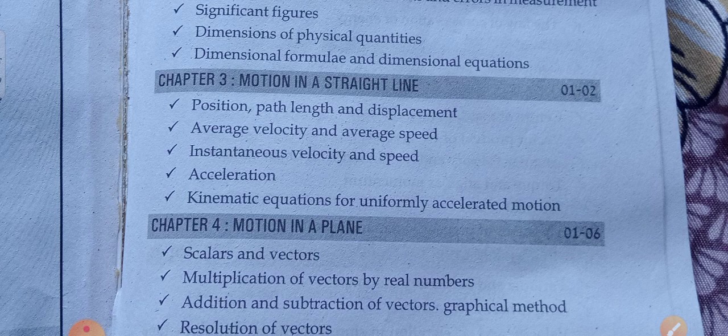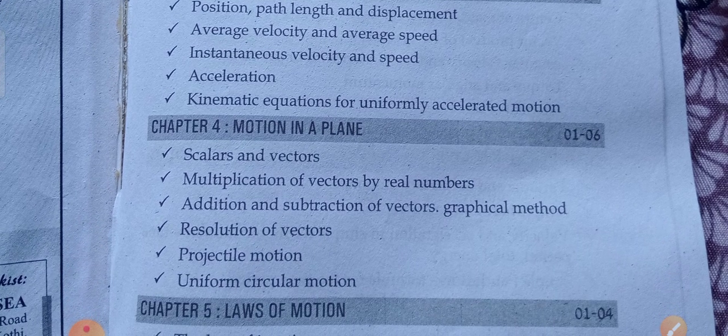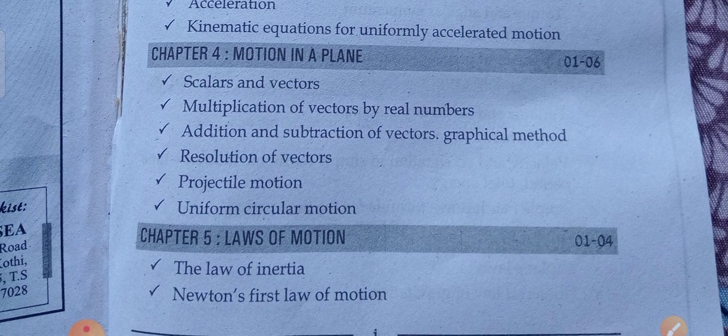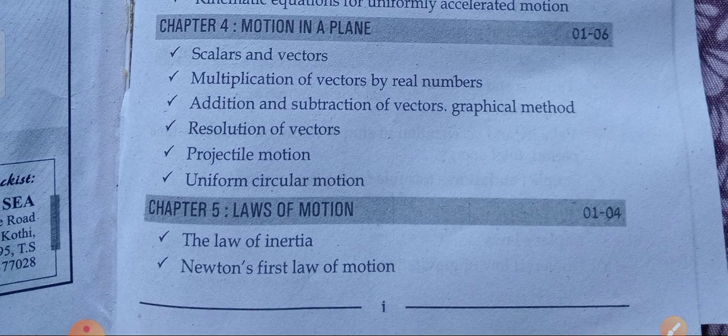The third chapter is Motion in a Straight Line, covering position, path length and displacement, average velocity and average speed, instantaneous velocity and speed, acceleration, and kinematic equations for uniformly accelerated motion. The fourth chapter is Motion in a Plane, covering scalars and vectors, multiplication of vectors by real numbers, addition and subtraction of vectors by graphical method, resolution of vectors, projectile motion, and uniform circular motion.